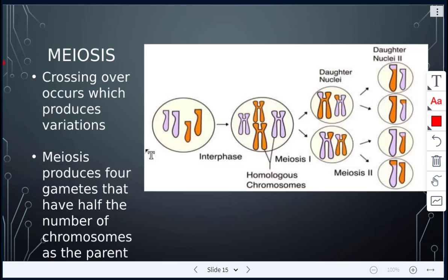Here we have a diagram showing meiosis. We have the original cell, then replication occurs. You can see a mix of orange and purple chromosomes — that's called crossing over, and this is what produces variations. The final result of cell division produces daughter cells that do not look the same as the original cell. Meiosis produces four gametes with half the number of chromosomes as the parent. Cell division occurs twice: meiosis one and meiosis two.